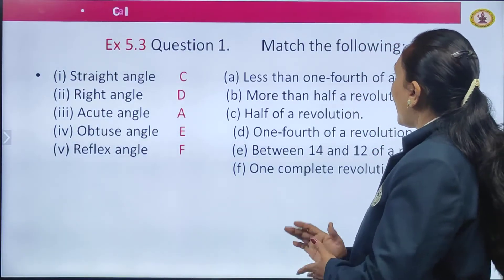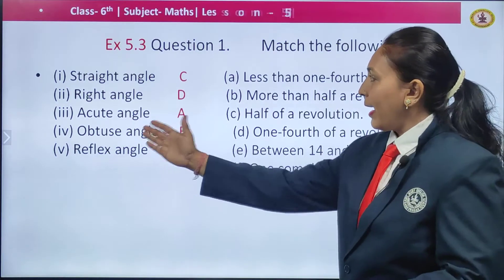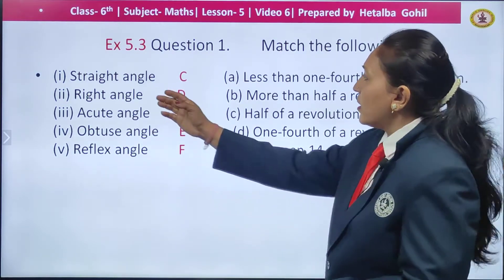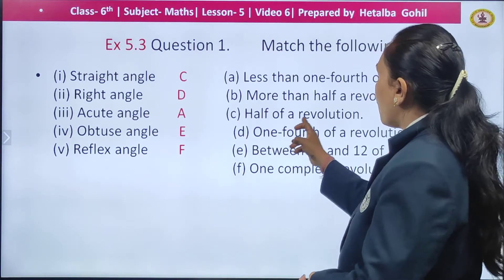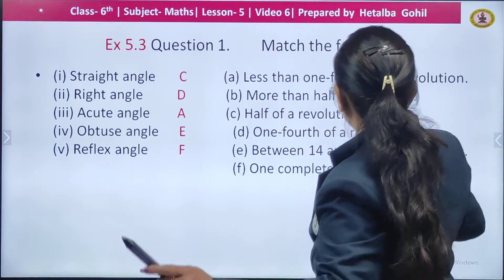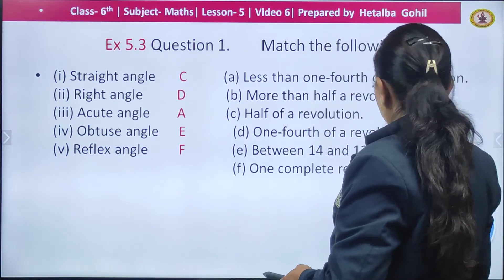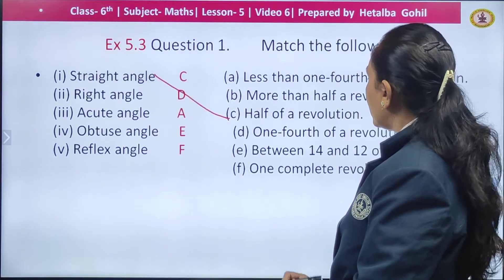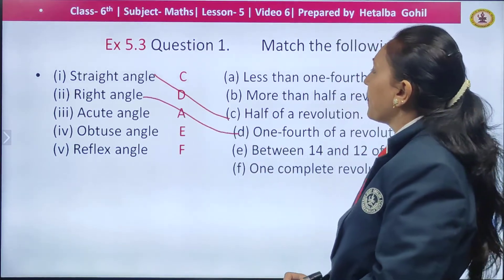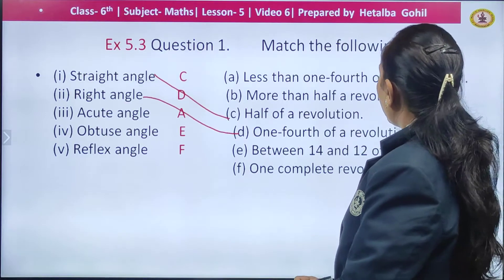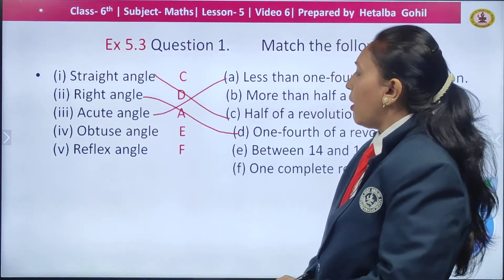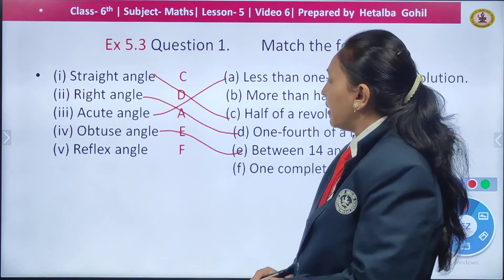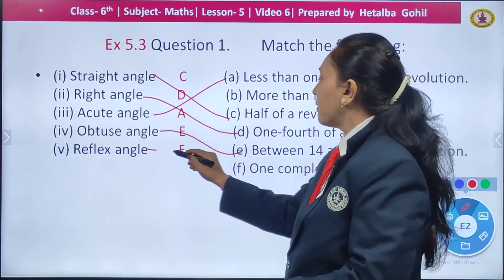The first question we have here is match the following. Side A and side B are given to you. You can see the red letters — they are your correct answers. Straight angle is half of a revolution. Right angle is one fourth of a revolution. Acute angle is less than one fourth of a revolution. Obtuse angle is between one fourth and one half of a revolution. Reflex angle is one complete revolution.